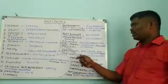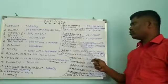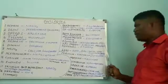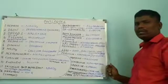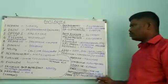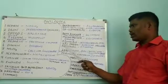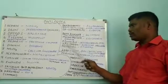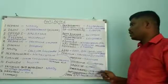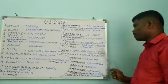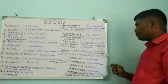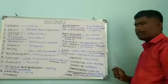Next drug is isoniazid. In isoniazid overdose, vitamin B6, otherwise called pyridoxine, is used as an antidote. In OPC poisoning — organophosphorus compound poisoning — atropine or pralidoxime is used as an antidote. Pralidoxime is otherwise called injection PAM.